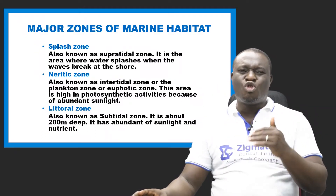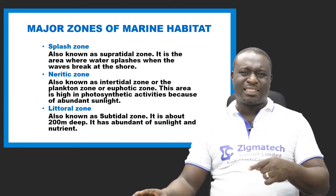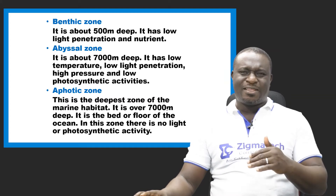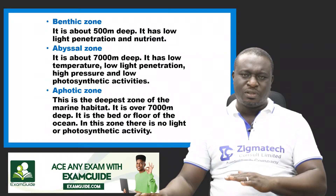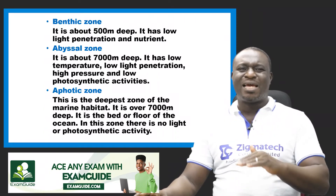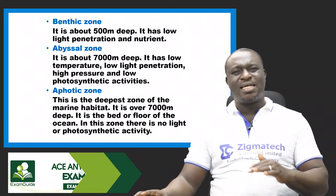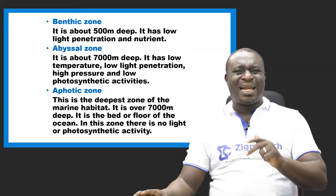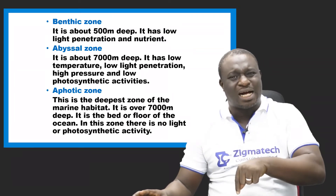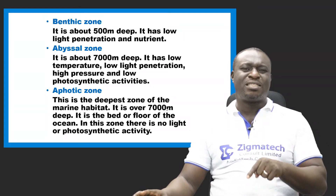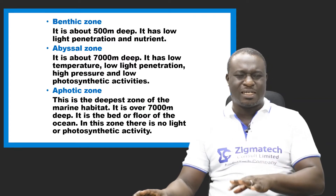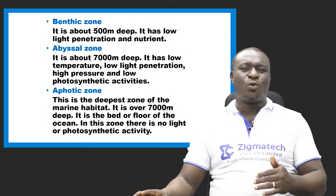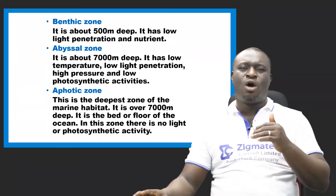The littoral zone is about 200 meters deep with abundant sunlight and nutrients. After that is the benthic zone, about 500 meters deep. Then we have the abyssal zone, about 7,000 meters deep, where temperature is low, light penetration is low, but pressure is high. After the abyssal zone is the aphotic zone — the deepest zone, over 7,000 meters deep.